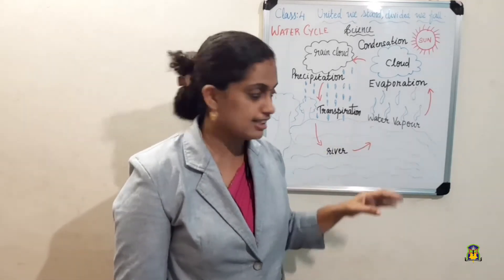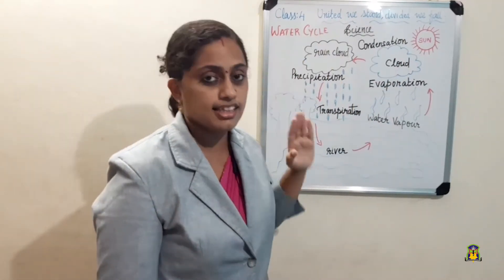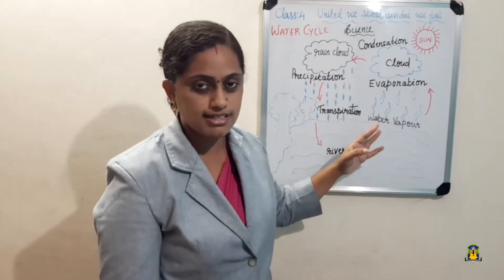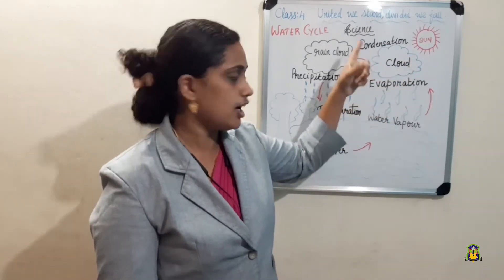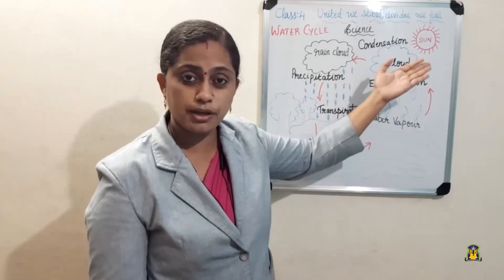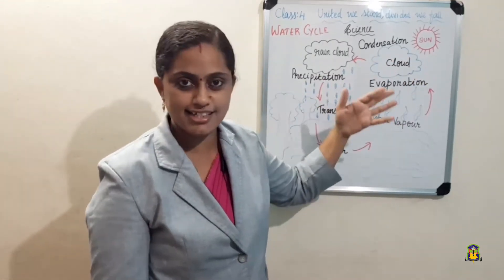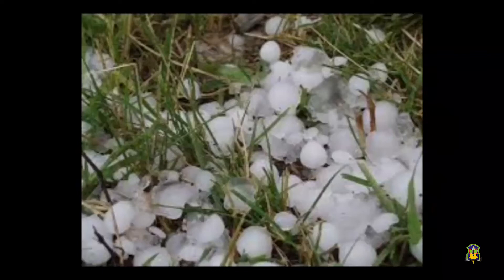To summarize the water cycle: evaporation is the process of changing water to water vapor. Condensation is exactly the reverse — the process of changing water vapor back to water. When clouds formed by condensation cannot hold water anymore, they fall down as rain, hail, snow, etc.